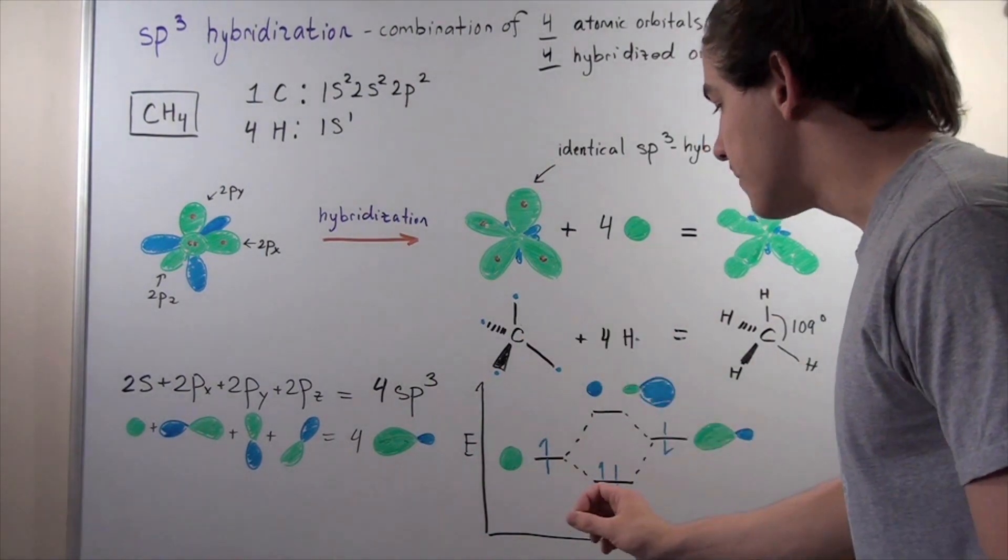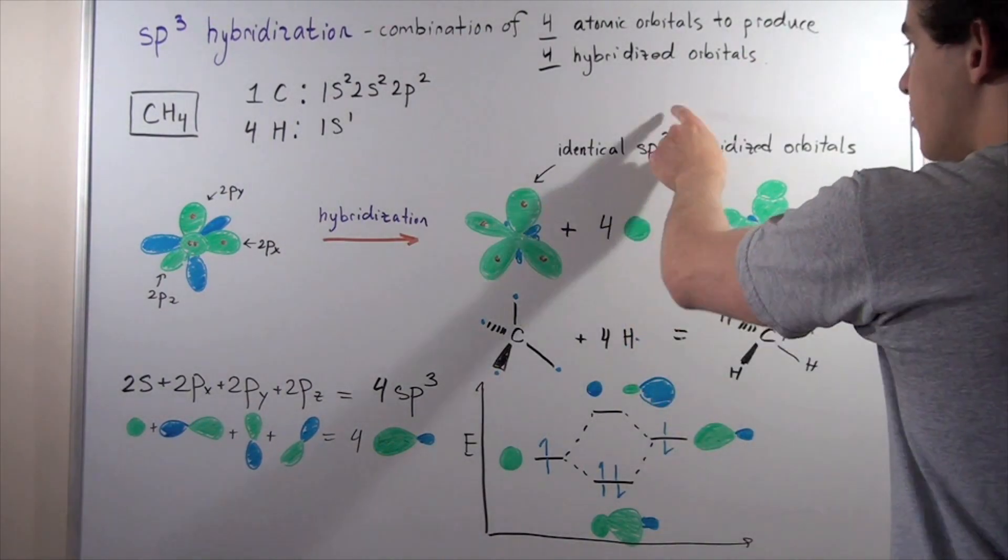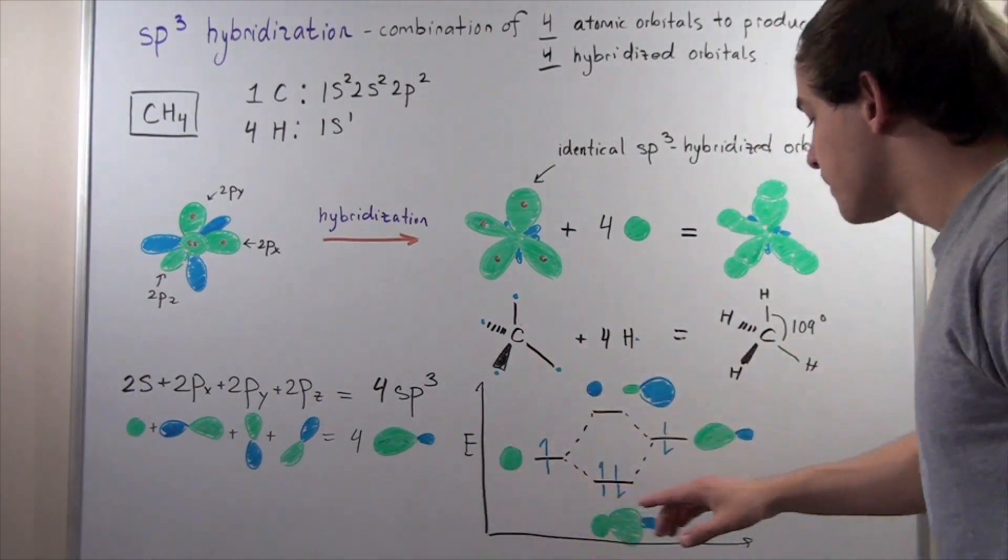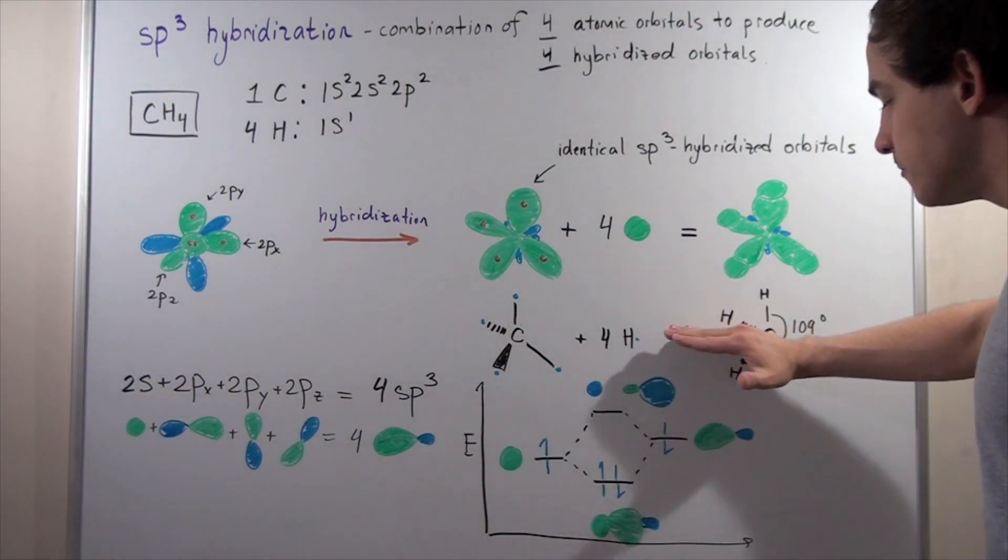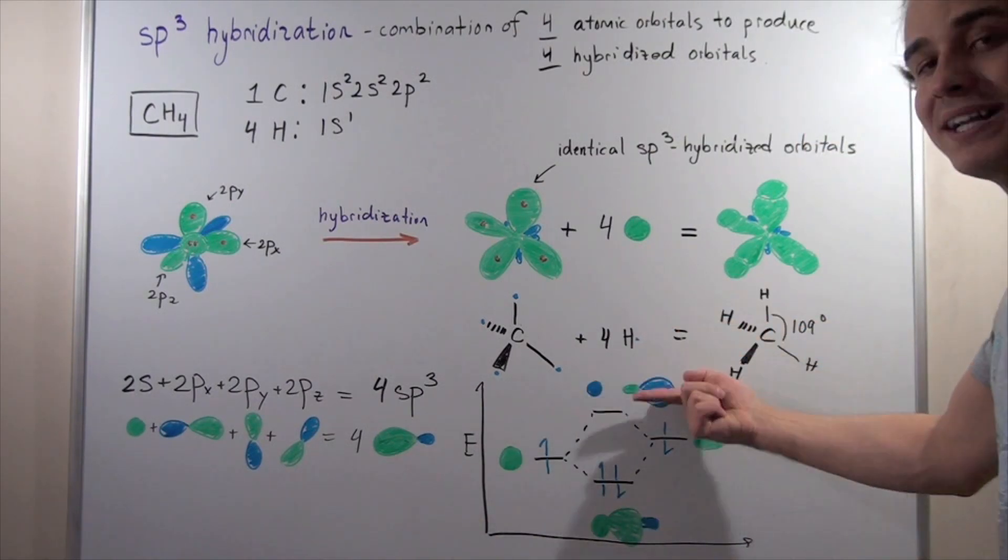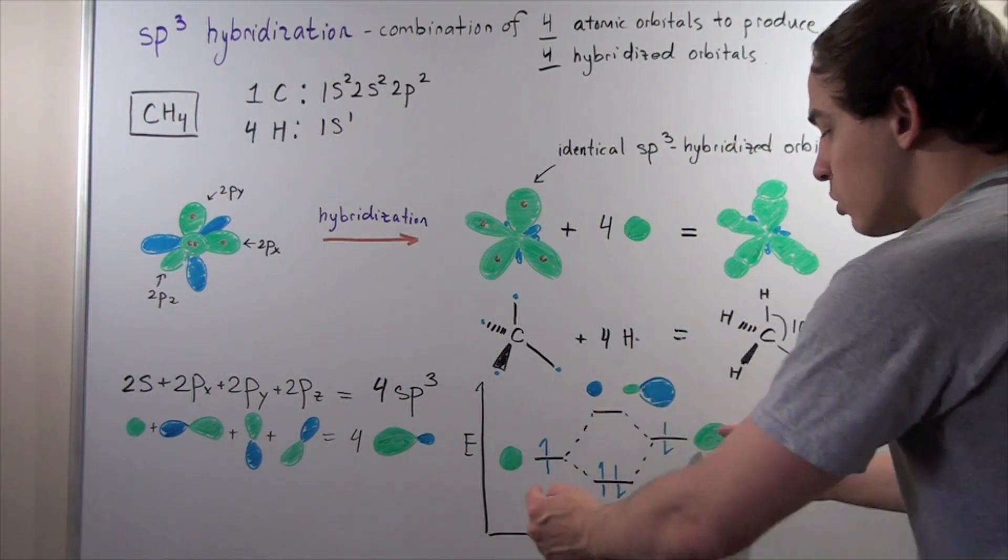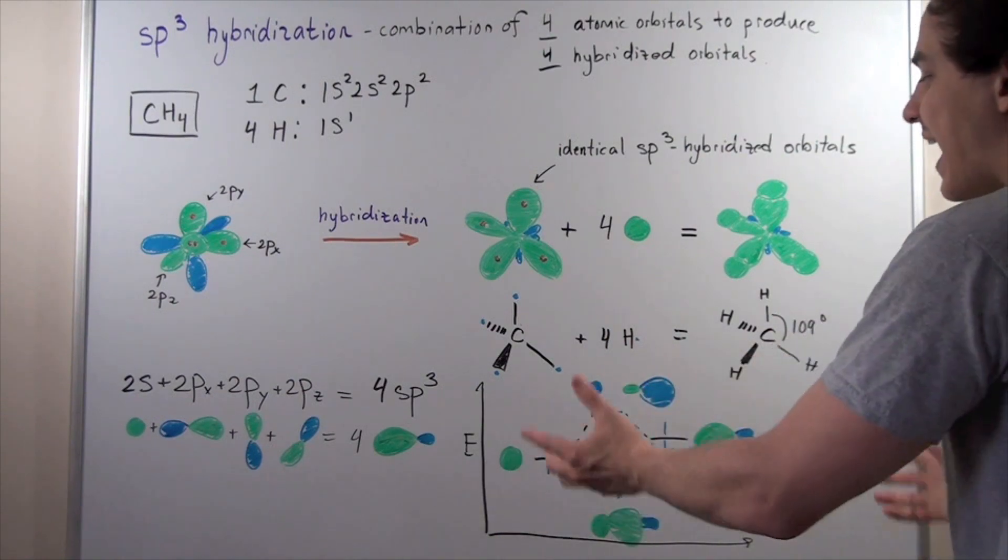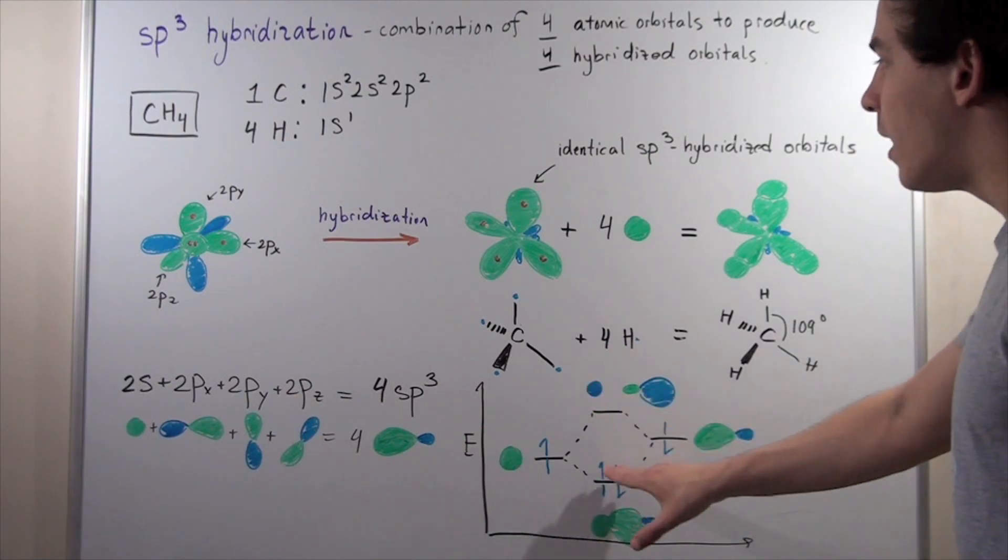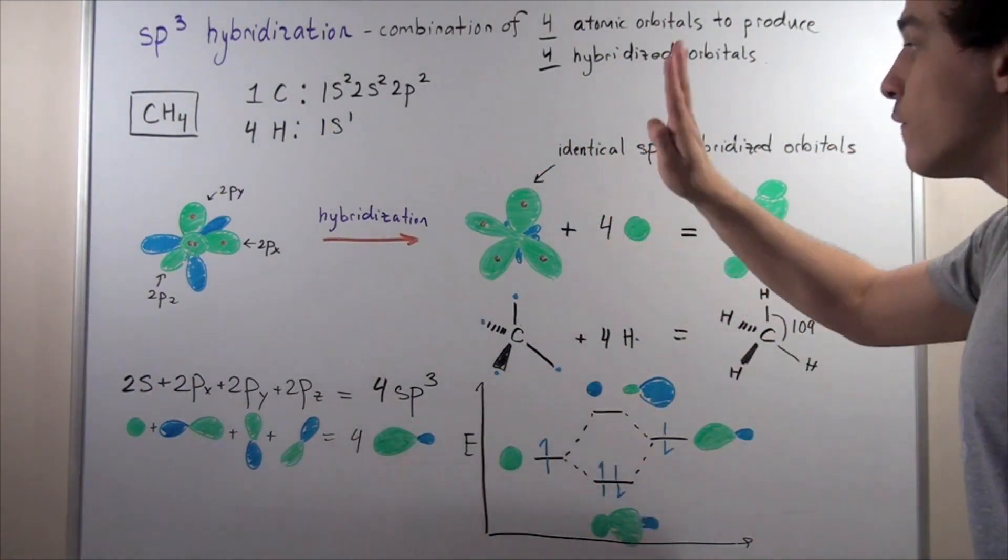Now let's look at the energy diagram. If we want to combine one of these 1s with the sp3 hybridized orbital, the 1s will be slightly lower in energy than the sp3. The sp3 will be slightly higher. They will combine to form a bonding and an anti-bonding molecular orbital. Here we have the bonding, and the electrons will go into this orbital. Here we have the anti-bonding. Electrons will not want to go into this orbital. They will stay in this bonding orbital. This is exactly what happens in this picture, except this happens four times.